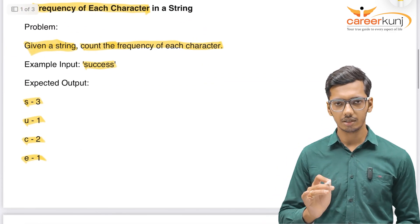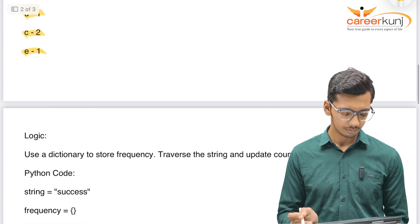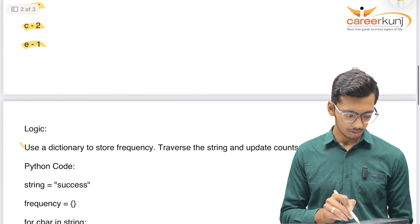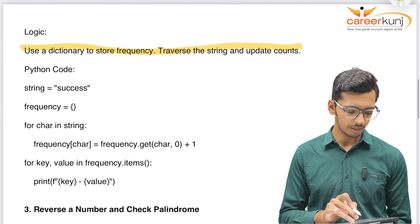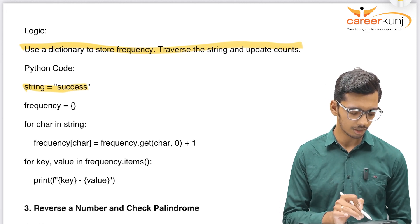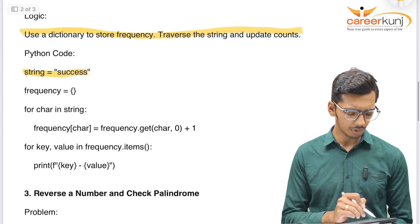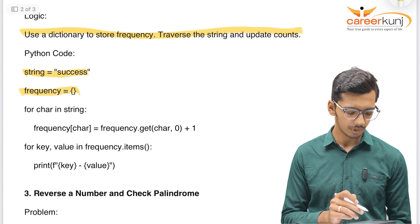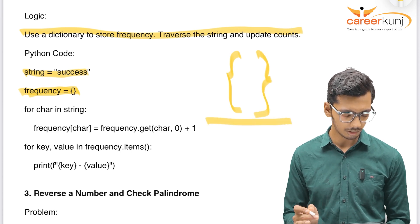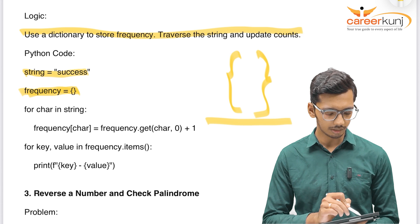Now before jumping into the code, let's understand the logic. In Python, we use dictionary to store the frequency or traverse the string and update the counts. Same thing we will do here. First, I will initialize my string as success. Here it can be any input as well. Frequency I am keeping as a dictionary. These two brackets are used to initialize the dictionary in Python. As of now, dictionary doesn't have any value.